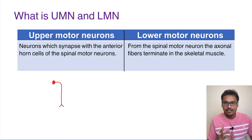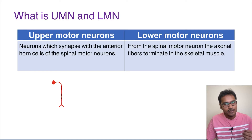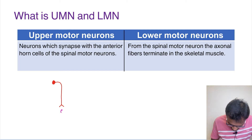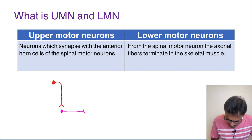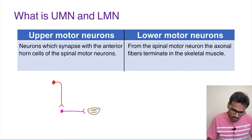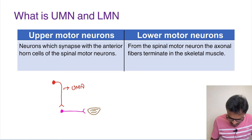From the spinal cord, there will be starting of one neuron which is ultimately innervating the skeletal muscle. That neuron is called as lower motor neuron. The lower motor neurons start from the anterior horn cells and they directly go and innervate the skeletal muscles. The one shown in red here is nothing but upper motor neurons, and the one in pink is our lower motor neurons.